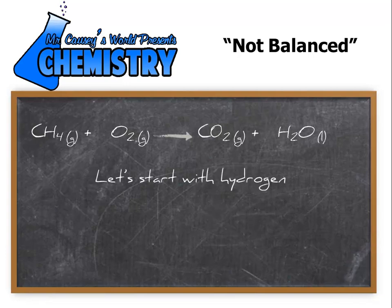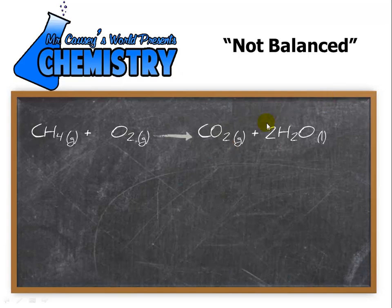So let's start with hydrogen. Notice that we'll just put a two right there, right over here. Two times two is four, so we have four hydrogens. And now we have four oxygens because that gives us two here, and then we notice we have two over here. But we only have two oxygen on the left side, so let's go ahead and multiply that by two.